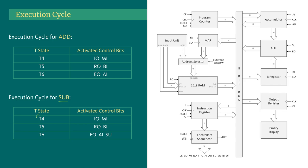The execution cycle for SUB is very similar to ADD. The T4, T5 steps with IO/MI and RO/BI are identical. The only difference in T6 is that the SU bit is also activated alongside EO and AI. When SU is 1, the ALU performs a subtraction operation instead of addition.